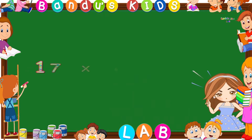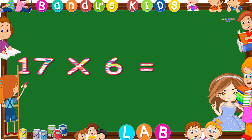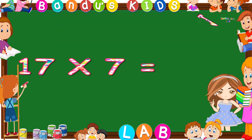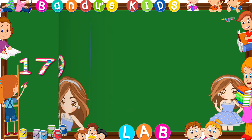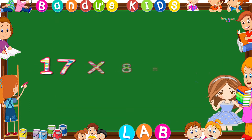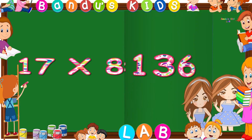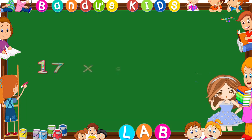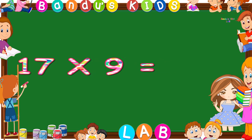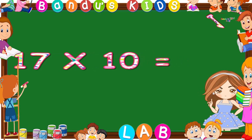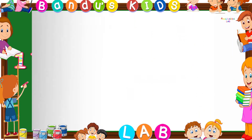17 6s are 102. 17 7s are 119. 17 8s are 136. 17 9s are 153. 17 10s are 170.